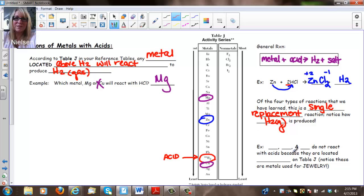So copper, silver, and gold do not react with acids. We've got copper, silver, and gold. So copper, silver, and gold do not react with acids because they are located below the H2 on Table J. And those are the metals that are used for jewelry.